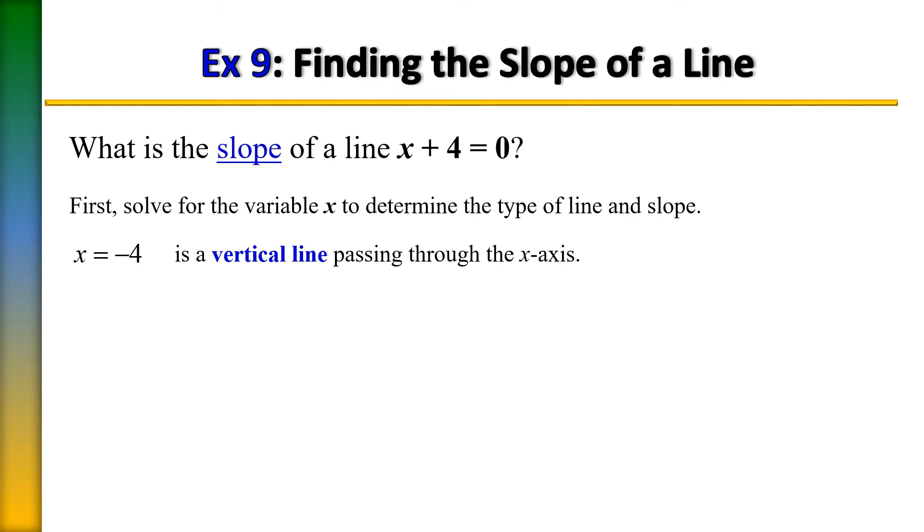And recall that all vertical lines have a slope that is undefined. So therefore the slope of the line x plus 4 equals 0, the slope m equals undefined. That is your answer. The word undefined.